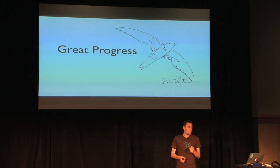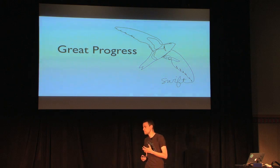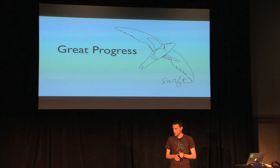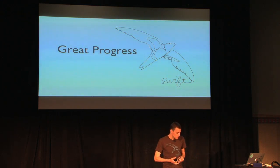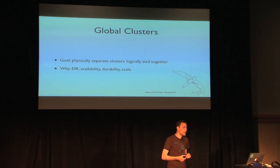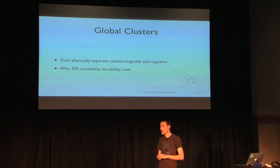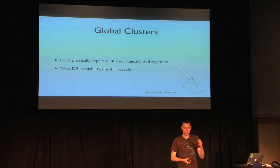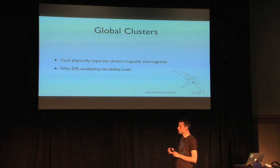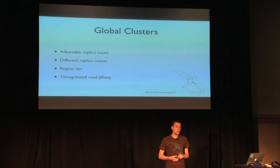Looking at how we've done over the past six months, we've made really great progress with some exciting contributions to the code. Looking at the major features added since the last time we were meeting in San Diego — the first is global clusters, something I've been asked about since Swift began: how do I store my data across a very wide geographic area? We've done a great job adding building blocks into the code base, and here's what we've specifically done in the last six months.